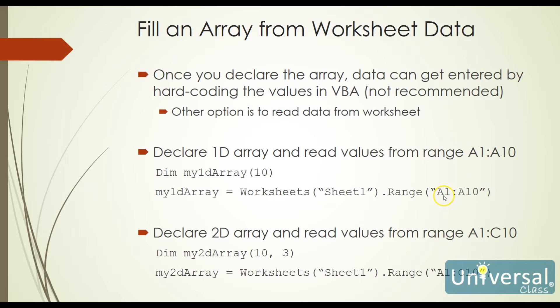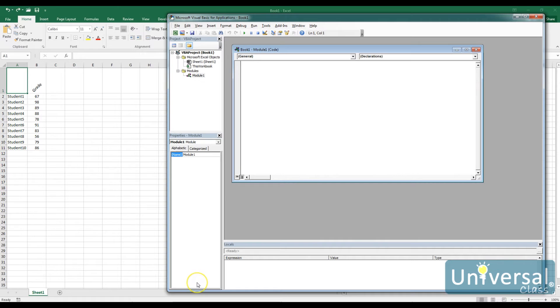We set that array equal to worksheets dot range, then the column from which we need to pull the data — in this case, A1 to A10. If the A column has a header in it, we may need to go from A2 to A11. Our two-dimensional array is similar. We dimension it — here I call it my2d array — and declare that it is 10 rows tall and 3 columns wide, so columns A, B, and C. We then set my2d array equal to worksheets Sheet1 dot range, covering those three columns and 10 rows.